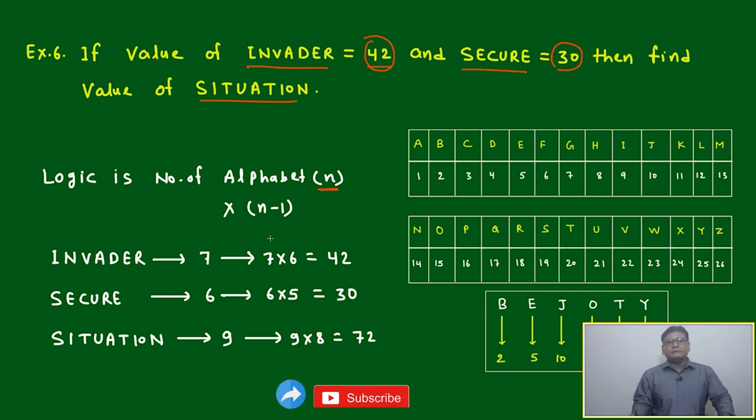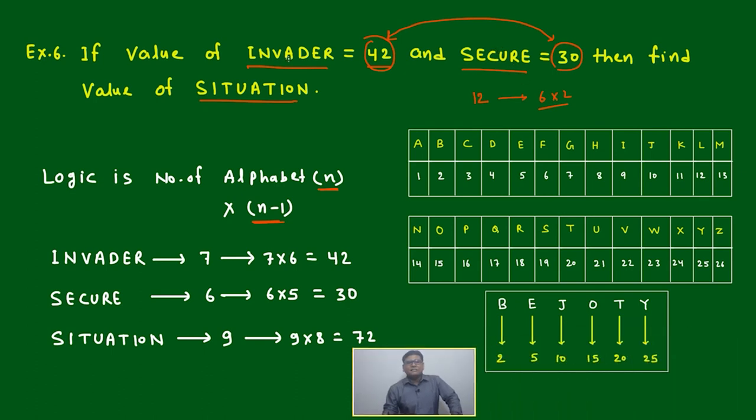How to do it? Logic is number of alphabet n multiplied by n minus 1. How we can say very fast? Because only one observation between 42 and 30, what is the gap? Gap is 12. Why is 6 coming in the picture? Because here it is 6 alphabet, here it is 7 alphabet. Means the gap is something related to 6, means we are dealing with the number of alphabets in a word and just the next number.